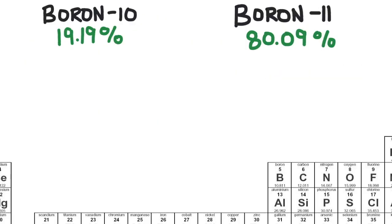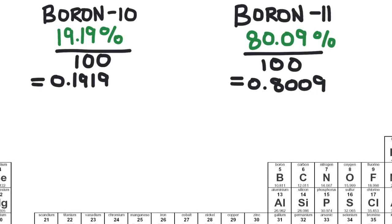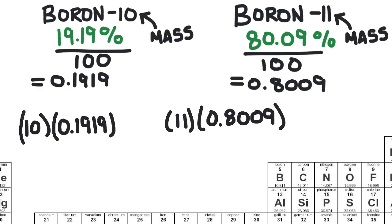To calculate the weighted average, first you change the percent abundance into decimal form by dividing by 100. Then multiply each mass by this abundance in the decimal form, and then add them all together.